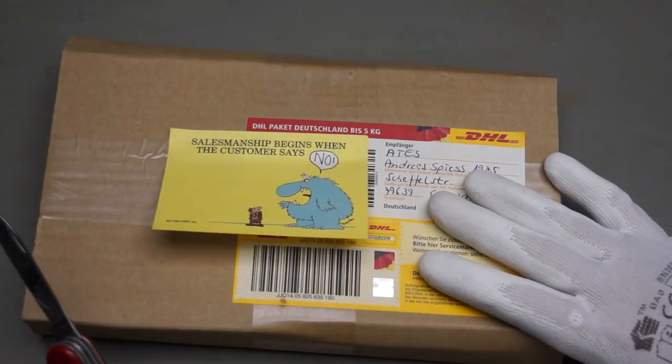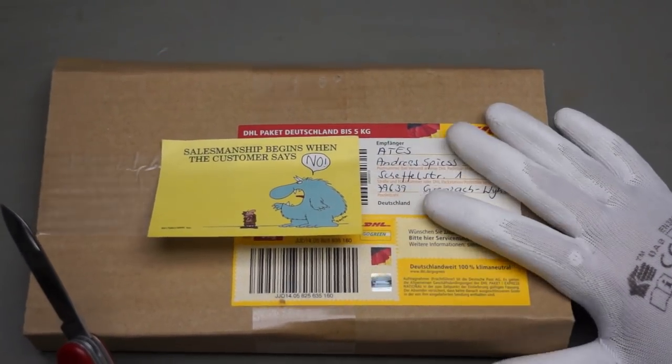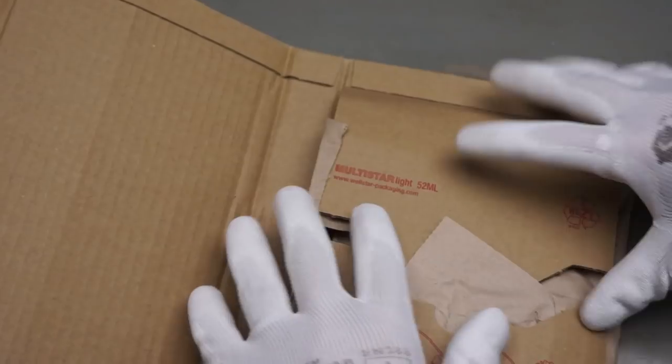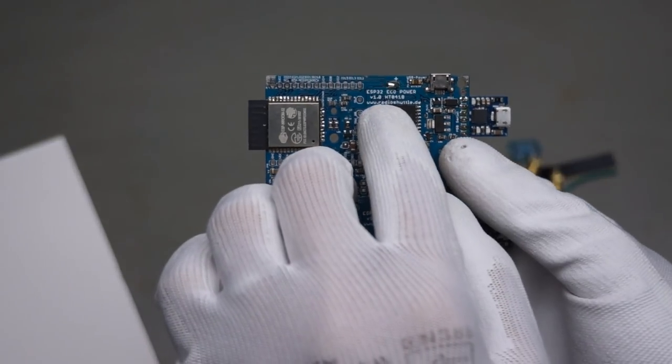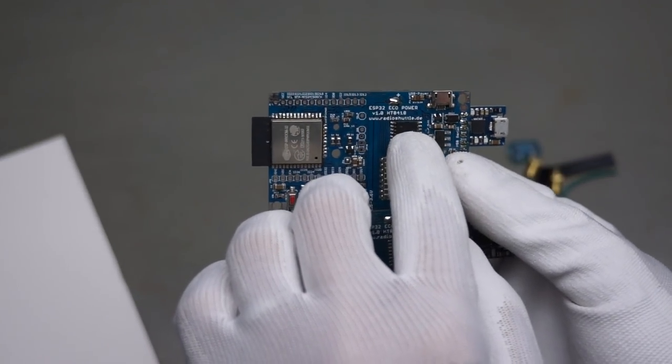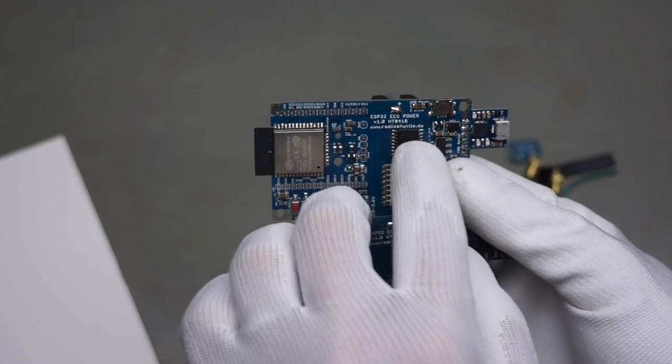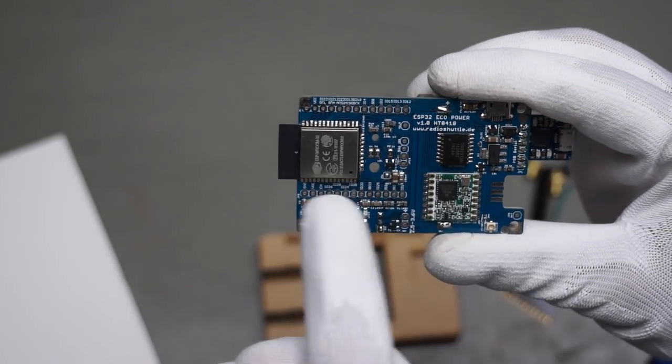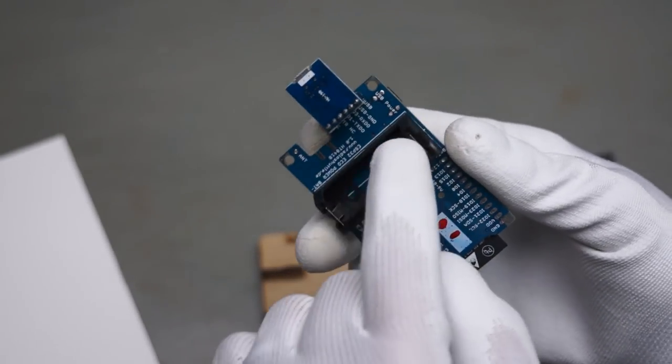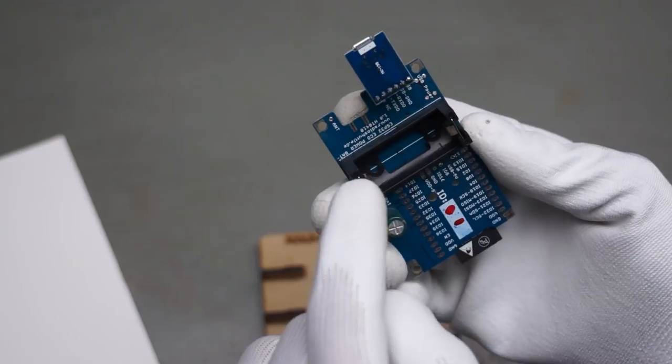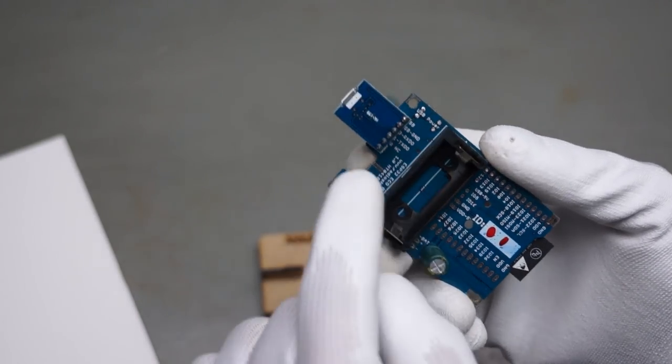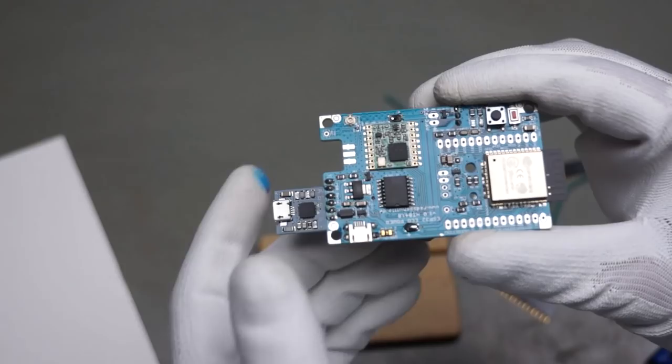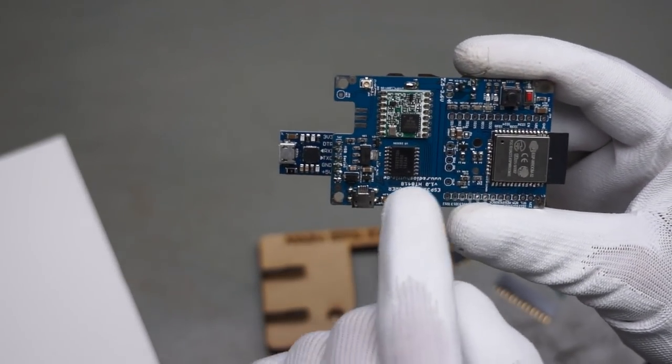And here is a package from Germany. From a viewer from Berlin. So these are ESP32 Eco Power boards from RadioShuttle.de. And they contain an ESP32 and a LoRa board and some other stuff. And a battery compartment for a 3 volt lithium battery. And here is the FTDI adapter. So it's not on this board. And we understand now. Together with this. With the name Eco.